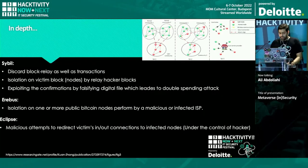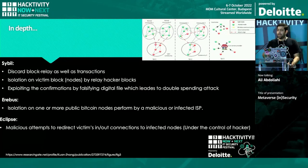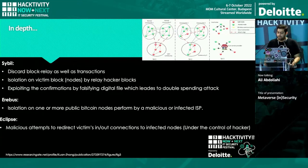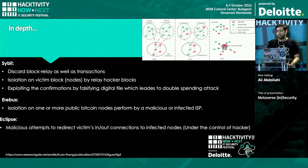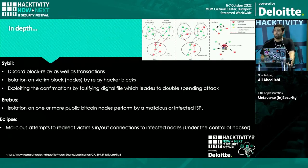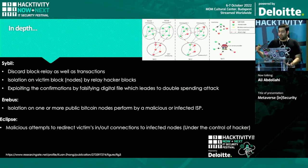Going a bit deeper into the previous slide, a Sibling cyber attack leads to double spending and tries to infect honest communities, as well as falsifying digital files. Erebus is similar but targets internet service providers — the ISPs hosting and providing services to public Bitcoin nodes. The Eclipse attack is a redirection attack, trying to redirect victim connections to other already compromised and infected nodes.